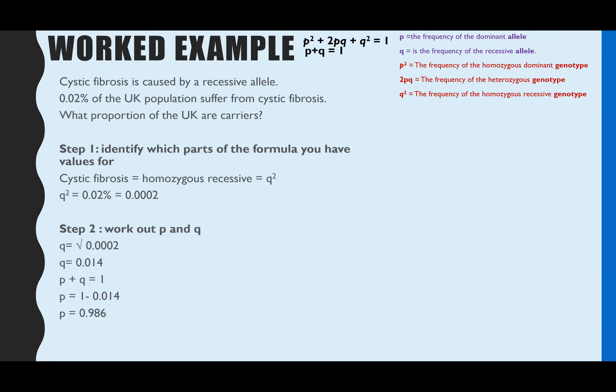Then we need to do our step three, which is look back at the question and identify which parts of the formula you're actually being asked to calculate. In this case, we've been asked what proportion of the UK are carriers. Now, if they're a carrier, that means they have the recessive allele but they don't have the disease. So they must be heterozygous. So we're being asked to work out 2PQ.